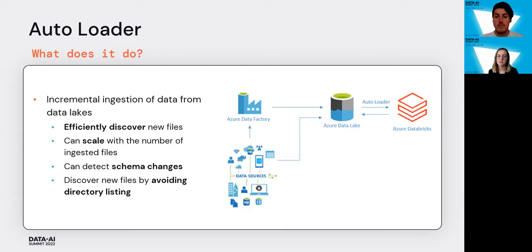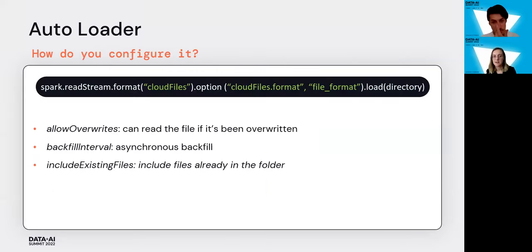In an Azure architecture, many different data sources are ingested via Data Factory pipelines into the data lake, or sources can push directly to the data lake. From Databricks, Autoloader can either list a specified directory or listen to a queue and get notifications about which files have arrived. To configure Autoloader, you simply specify the format as cloud files, which automatically triggers the Autoloader option, and then specify the file type — Parquet, JSON, CSV, or others.